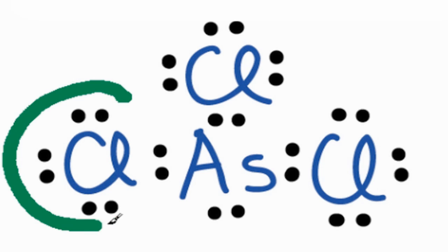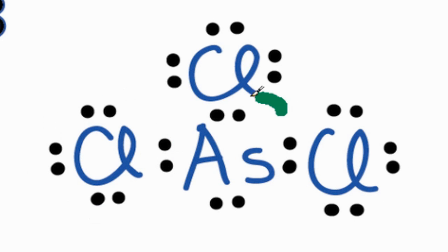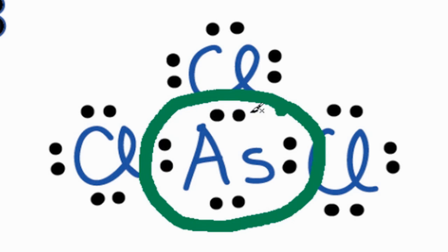So now the chlorine atoms, and they're all the same, they have 8 valence electrons, so their octets are full. And the central arsenic atom also has 8 valence electrons, so its octet is full as well.